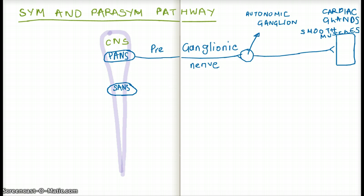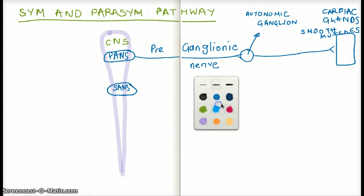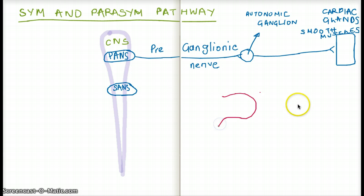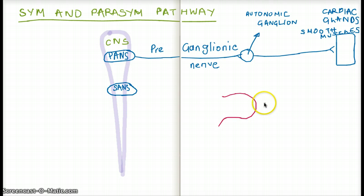Now let's talk about the receptors and neurotransmitters involved, because based on which receptor is synapsed or which neurotransmitter is released, it determines whether the pathway is sympathetic or parasympathetic. When the preganglionic nerve comes to the autonomic ganglion, it secretes a neurotransmitter called acetylcholine, which stimulates the autonomic ganglion.